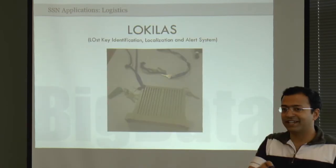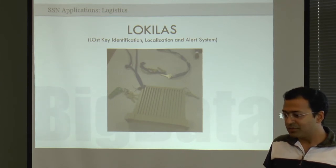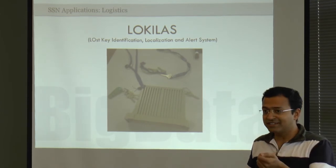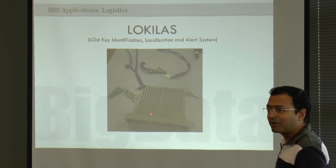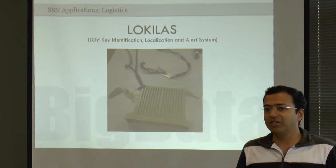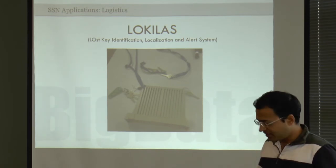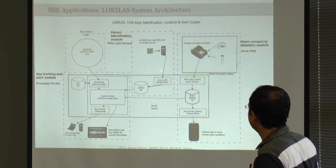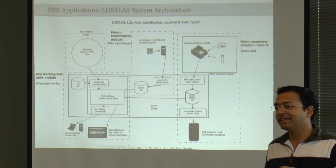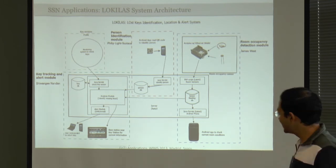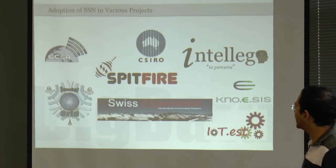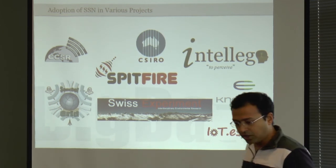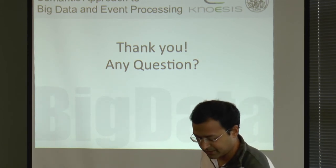I also spoke about a logistics application. This was a practical problem at Noesis — we have shared resources like shared keys, and people would misplace them. The question was: can you use an Internet of Things solution to solve this? We developed a system that looks at room occupancy and who has borrowed the key. If the room is not occupied, the person is pinged to return the key. We have an Android application developed for this. Finally, here are various projects around the world utilizing the SSN ontology. Thanks for your time — any questions?